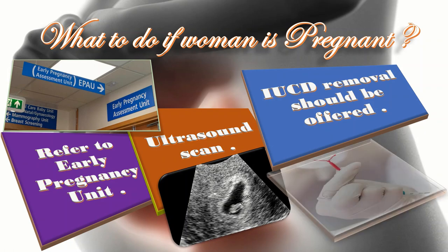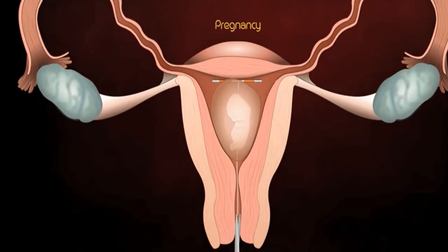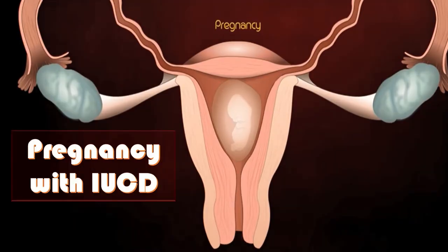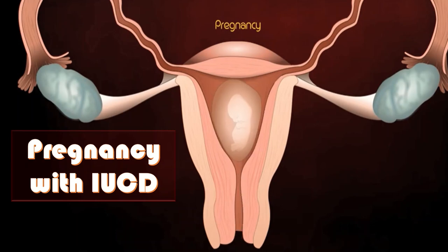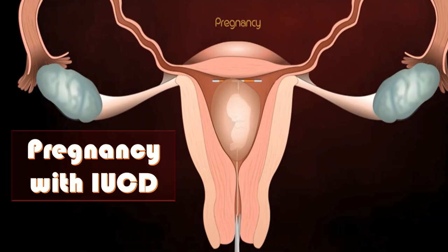In case of pregnancy with IUCD, women should be informed of the increased risk of second trimester miscarriage. Removal would reduce adverse outcomes but is also associated with a small risk of miscarriage. If the threads are visible, the IUCD should be removed. If the IUCD cannot be removed due to invisibility of the thread, this must be documented in the patient's notes.